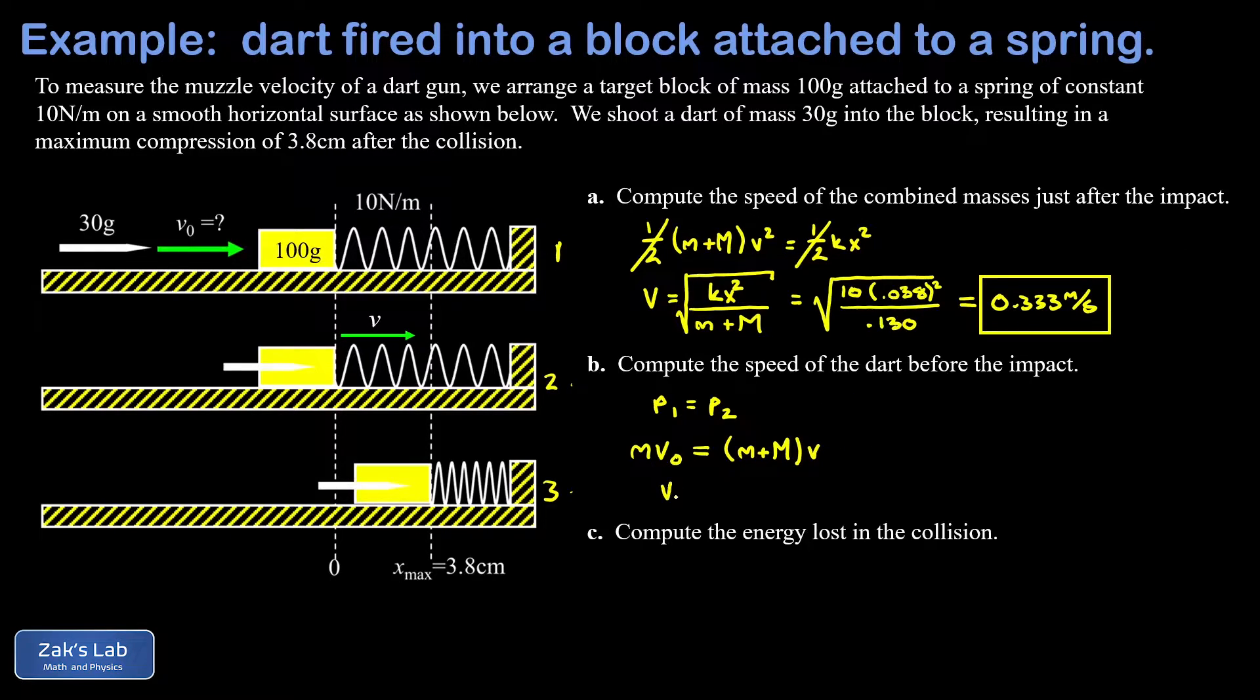Now we can just solve for V0, the initial velocity of the dart. That's little m plus big M, the combined masses, times the speed after the collision over little m, the mass of the dart. It's time to plug in the numbers.